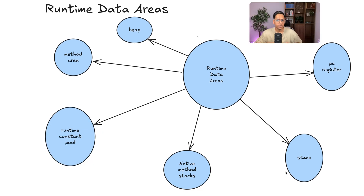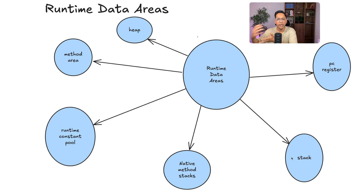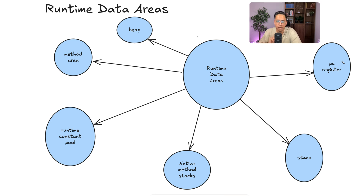Let's briefly talk about the runtime data areas. The computing machine has some instruction sets and tries to manipulate runtime data areas — called runtime because they are used at runtime. The types of runtime areas the JVM supports: the most popular is probably the heap — everyone working with the JVM is aware of heap memory. There's also the stack — what exactly the stack stores, how push and pop operations work, and how it helps a thread make sense of current execution. We also have the native method stack, runtime constant pools, and the PC register — the program counter register.